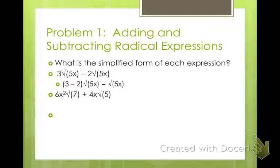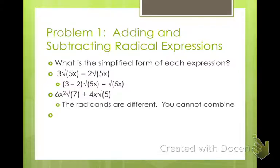6x squared square root of 7 plus 4x square root of 5. Can we combine these two? Well, our indexes are the same, but our radicands are not. We have a 7 and a 5, and we can't simplify either one of those, so we can't combine these radicands.